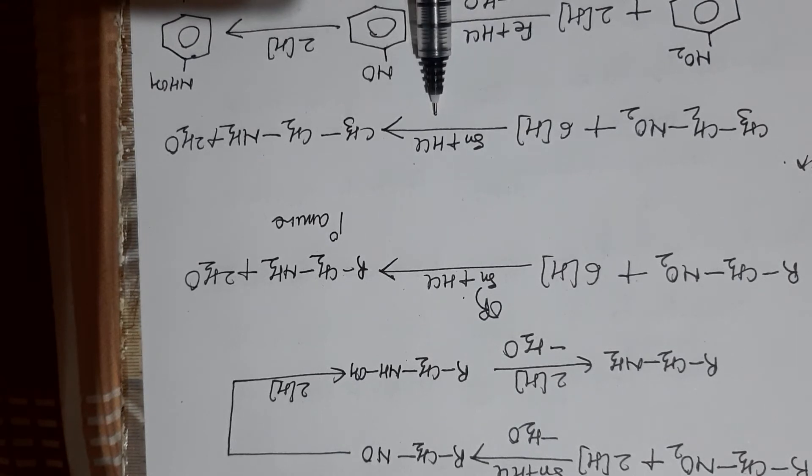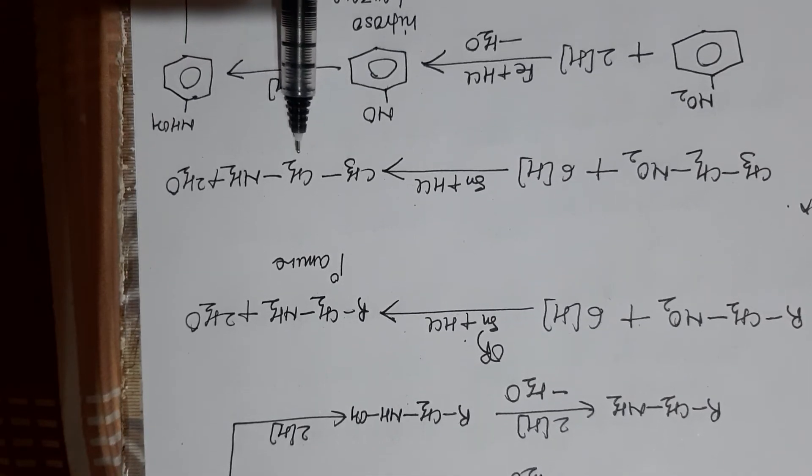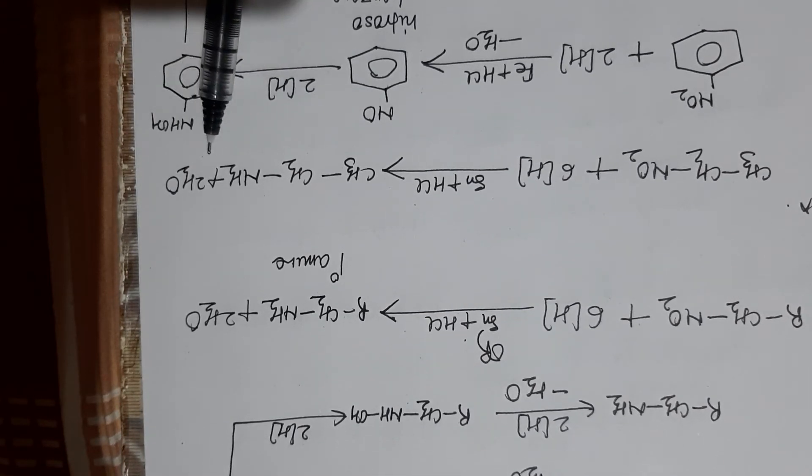There are two carbons here. It undergoes reduction in presence of Sn and HCl, so you are getting ethylamine and water. This method is also used for the preparation of aniline from nitrobenzene.